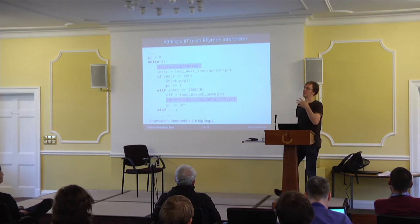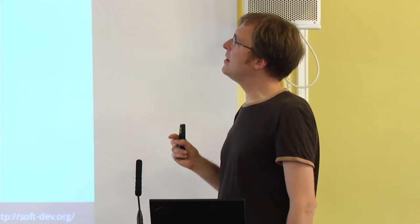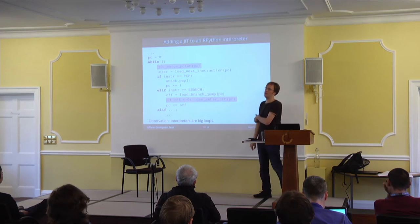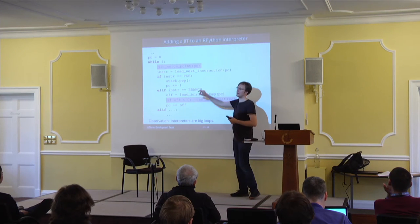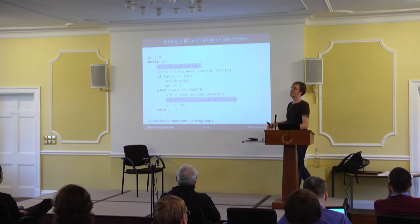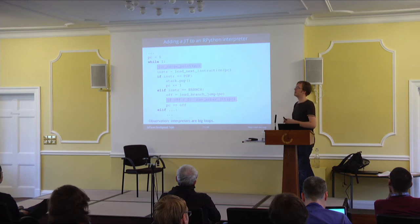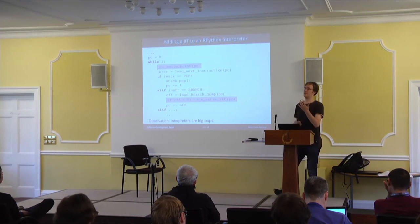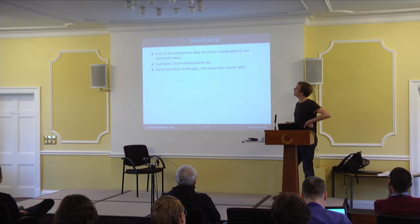With those two hints — marking the dispatch loop and backward branches — you can get the tracer to look at all your bytecodes, produce a trace out of them, and get assembler that matches the semantics of the language you've implemented. The interpreter's data structures, like the stack, will appear in the trace, but with not a lot of work you can completely optimize away that overhead and get a trace that corresponds quite naturally to the code running at the top level.